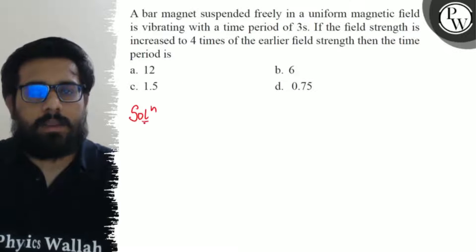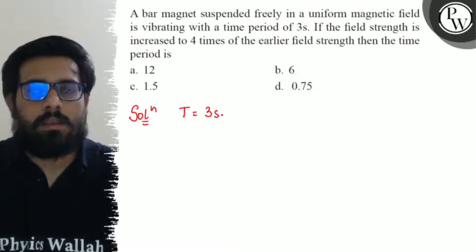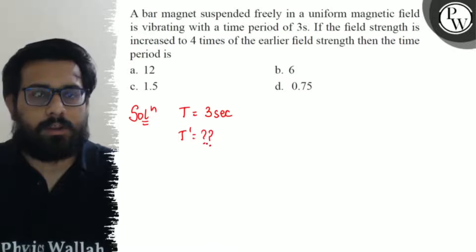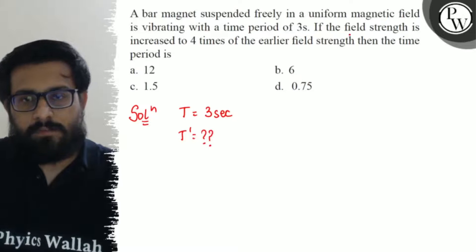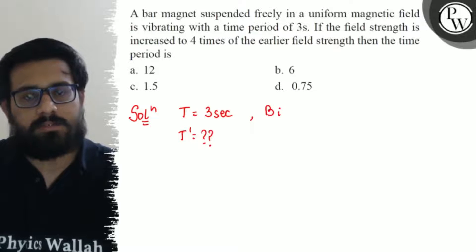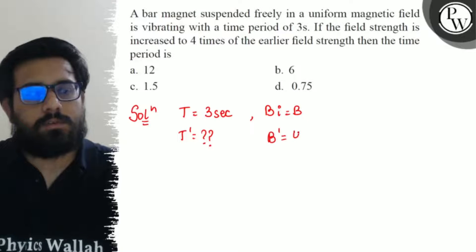In this question, we have a time period of 3 seconds, and we need to find the final time period. The field strength will be increased 4 times. So if the initial field strength is B, the final field strength will be 4B.